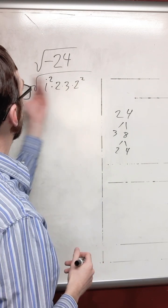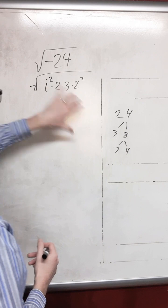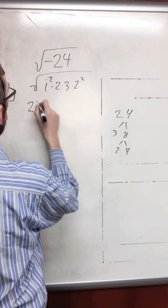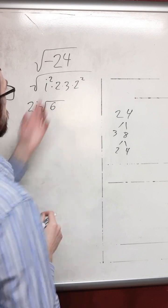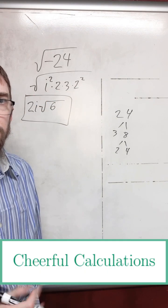We want to kick out the squares because square root is the inverse operation of squaring. So i is going to come out and the 2 is going to come out, and then the 2 and the 3 are left inside. This is your square root of negative 24.